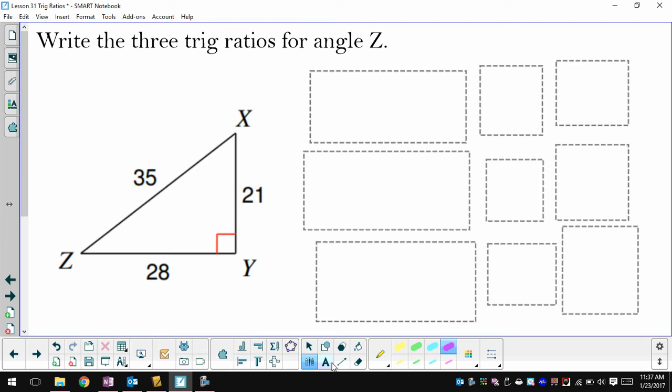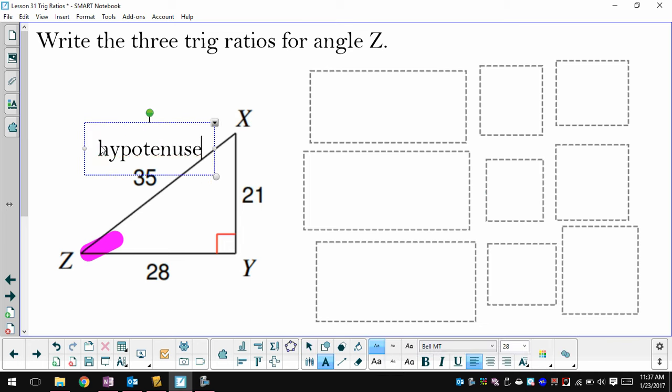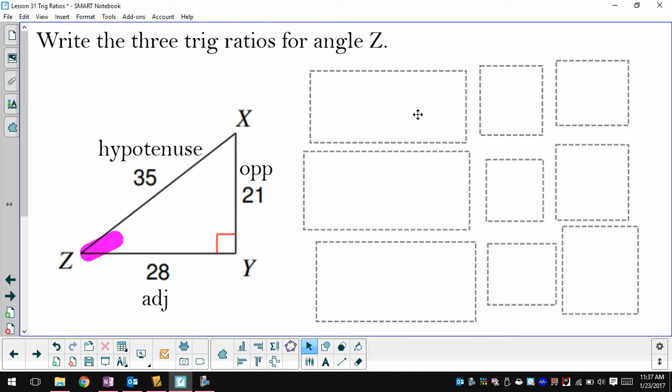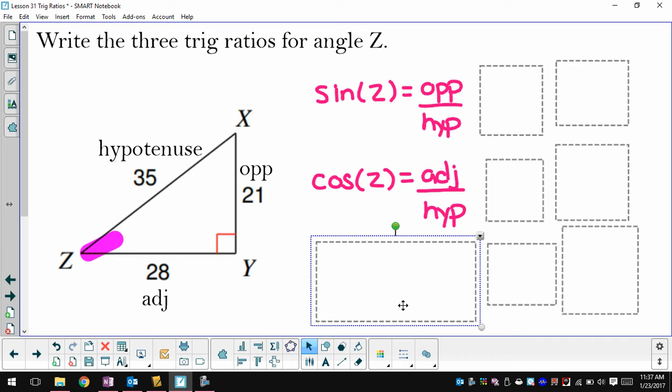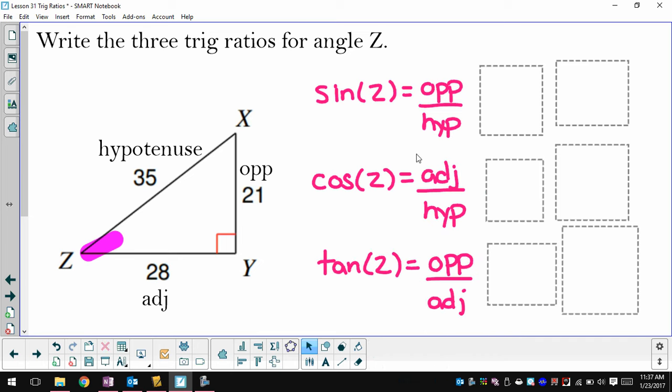We're going to use the same triangle, but this time we're going to do angle Z. So now my hypotenuse stays the same, it's still the longest side. But now the side opposite of angle Z is this one that's 21, and I'm just going to write op. So this one is my adjacent side. So I, as always, start by writing the formula for each of them.